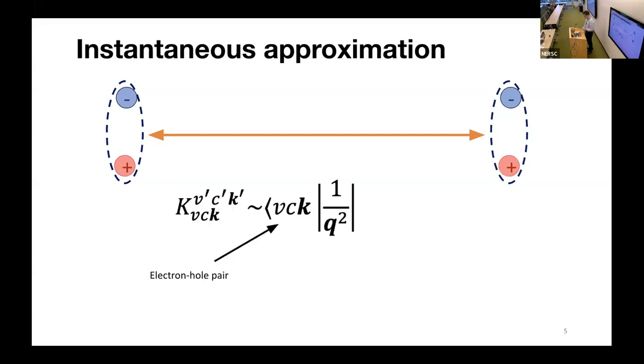So if we write our interaction, the interaction mediating this is just a Coulomb interaction, which in reciprocal space goes as one over Q squared. We typically assume these interactions occur instantaneously, and this makes the calculations much more tractable.